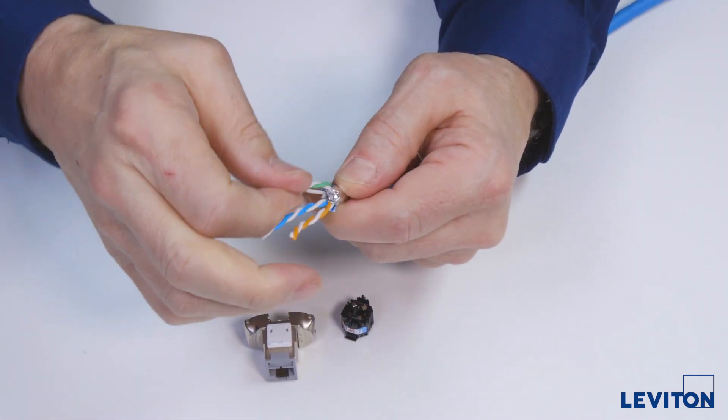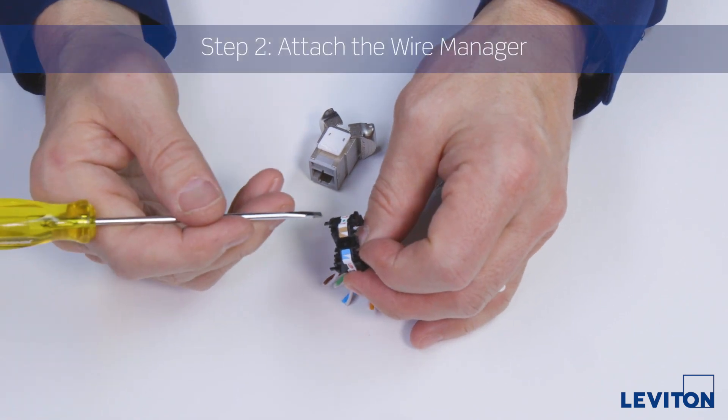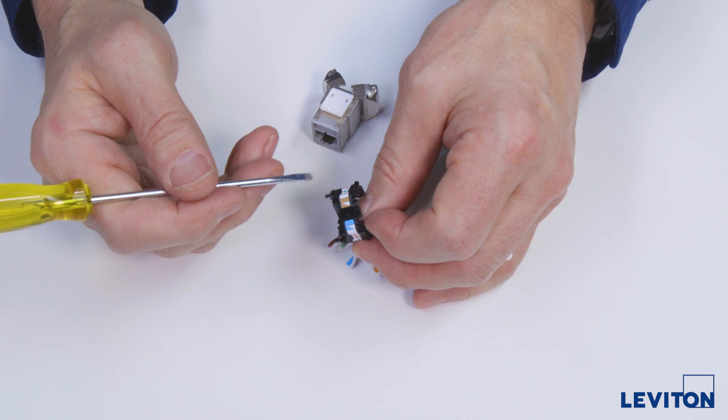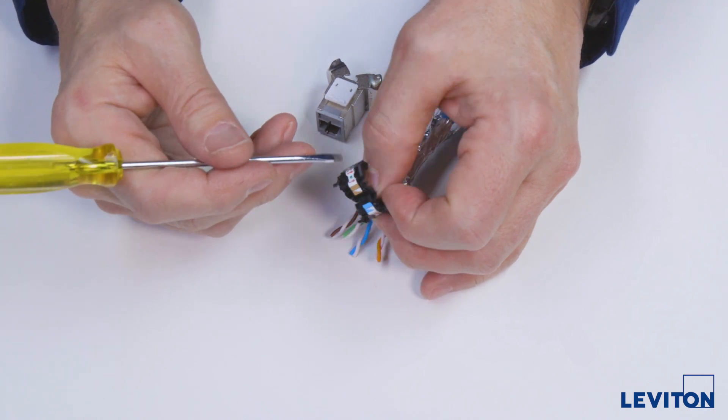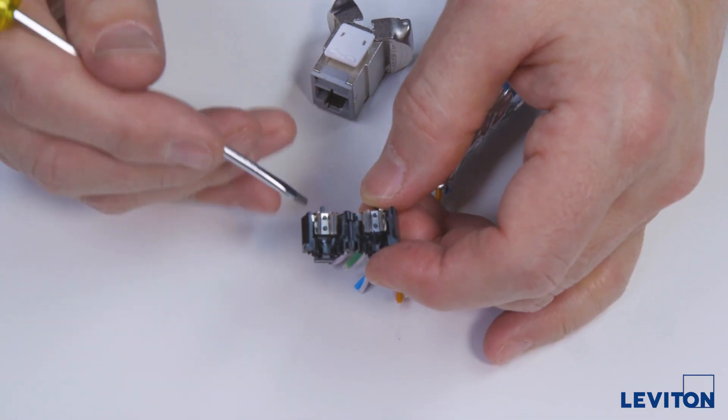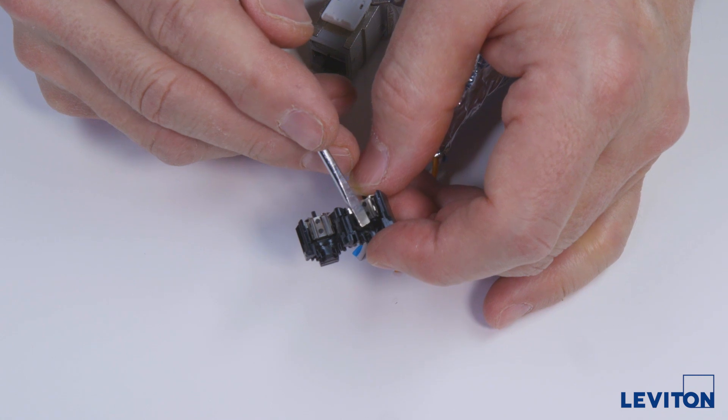Now we're ready to place the wire manager on the cable. You will see that the Atlas X1 wire manager label has T568A and B wiring options. For Category 8 terminations, you should only use the B wiring option. On the inside of the wire manager is a stop post that will line up with the strip point of the cable.